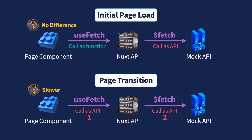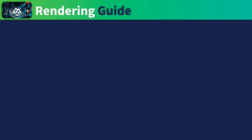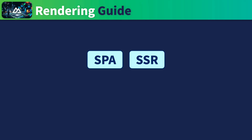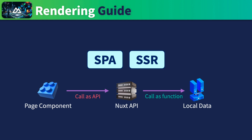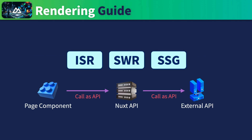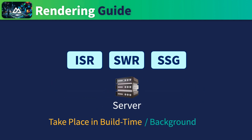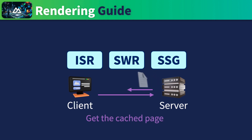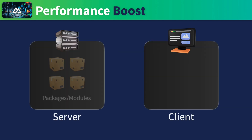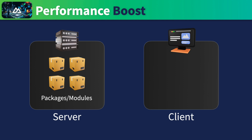If you have to use Nuxt API routes in your application, just keep this in mind. Use pure SPA or SSR rendering only if you're using a local data source, so there's no second hop. Or if you have to use an external data source, use it with ISR, SWR, or SSG. The two hops will take place at build time or in the background, so the user will not have to wait — they will be served one cached hop from the server. Nuxt API routes can also give you a potential performance boost, because the packages or modules you consume only in your API routes will not need to be bundled or sent to the client side. So it's a powerful tool — you just have to work with the trade-off.